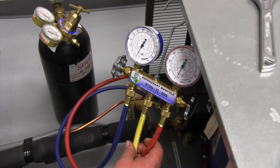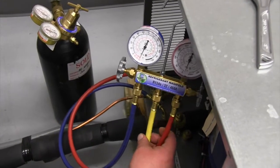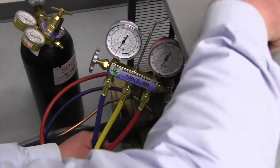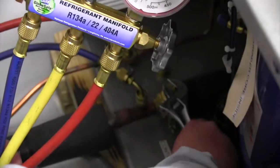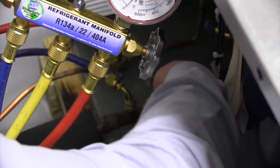Now that we've pulled our line set down to 500 microns, we can go ahead and turn our ball valves here at our outdoor condensing unit to give a positive pressure to our line set.